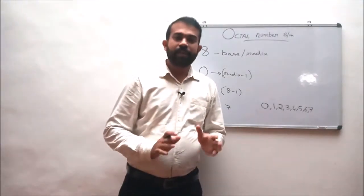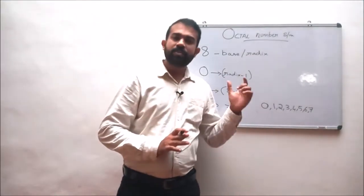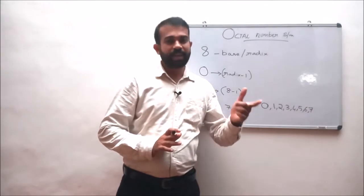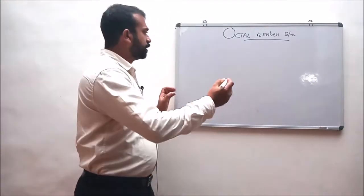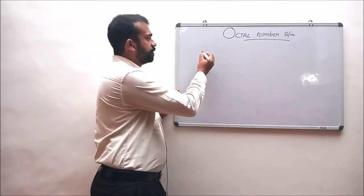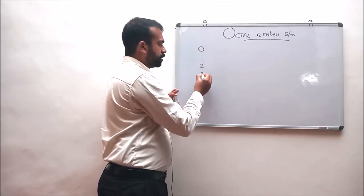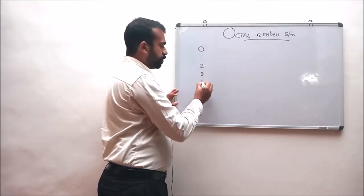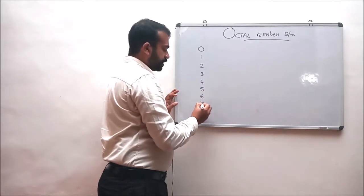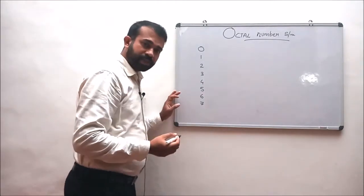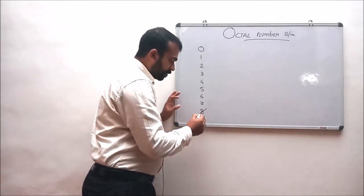So there are 8 digits available in the octal number system ranging from 0 to 7. When we come to the counting of this number system, the counting always starts from 0, 1, 2, 3, 4, 5, 6, 7 — and after 7, the next digit is not 8 at all.